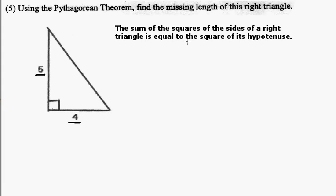So the sum of the squares, so I'm going to take a sum. The squares, so we're looking at five squared and four squared. The right triangle is equal to the, we'll call the hypotenuse H, of the square of its hypotenuse. So we'll go H squared.